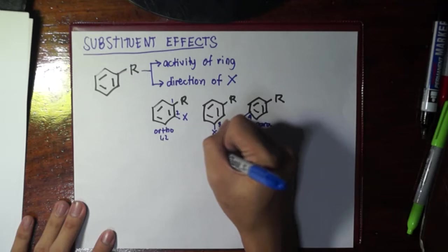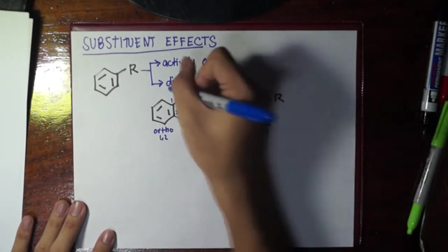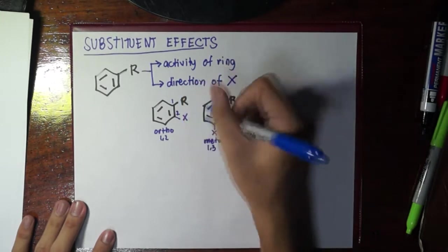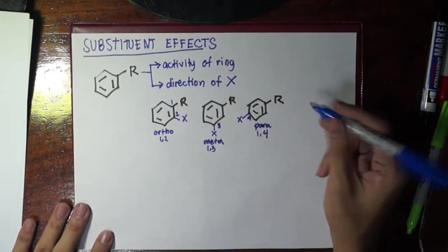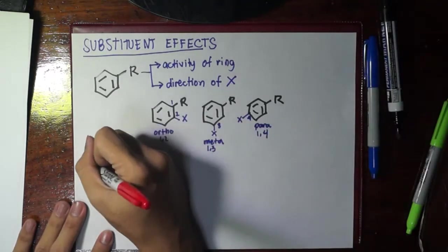If you put the X at four or exactly opposite to the R, this is para. The direction I'm talking about is whether the X will go ortho, meta, or para.